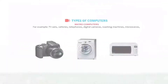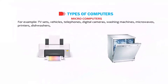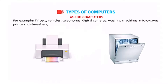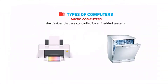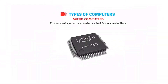Examples of embedded systems include TV sets, vehicles, telephones, digital cameras, washing machines, microwaves, printers, and dishwashers — all of these devices are controlled by embedded systems. Embedded systems are also called microcontrollers.